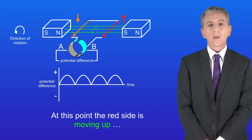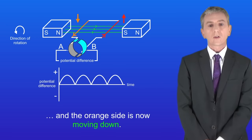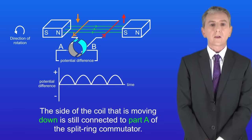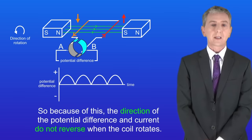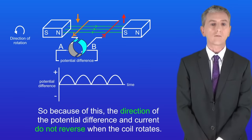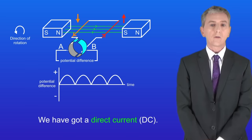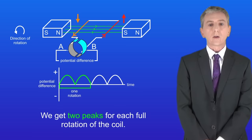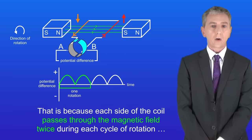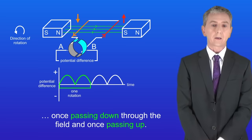As the coil moves around, the red side is now moving up and the orange side is moving down. But the side of the coil that's moving down is still connected to part A of the split ring commutator, and the side moving up is still connected to part B. So the direction of the potential difference and current do not reverse when the coil rotates — in other words we get a direct current, or DC. The graph shows how the potential difference changes: we get two peaks for each full rotation of the coil, because each side passes through the magnetic field twice per cycle — once moving down and once moving up.